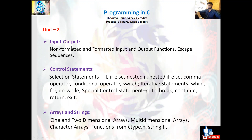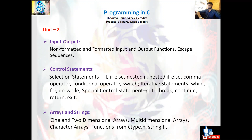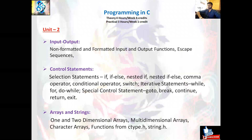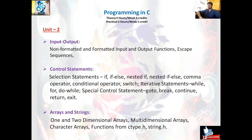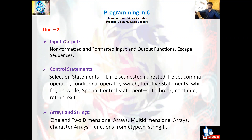According to the Programming in C syllabus, we have four units. Today we discussed two units: Unit 1 and Unit 2. Unit 1 covers Computer Fundamentals, Program Fundamentals, Algorithms, and Basics of C. Unit 2 covers Input/Output, Control Statements, and Arrays and Strings. We'll continue with the remaining two units in the next sessions. Thank you all — if you like this video, please like, share, and subscribe.